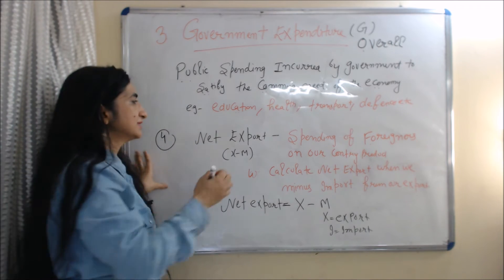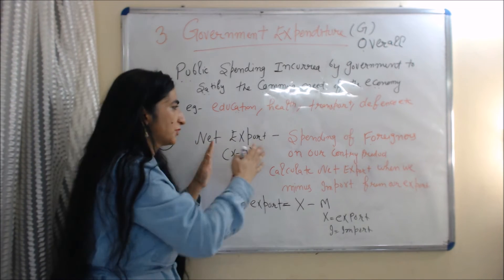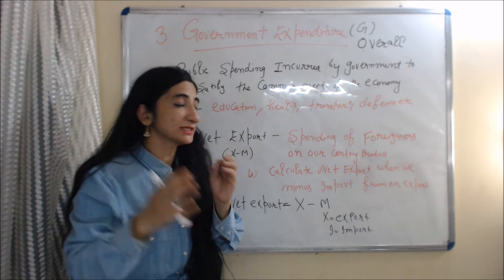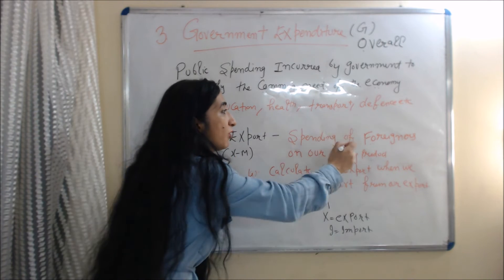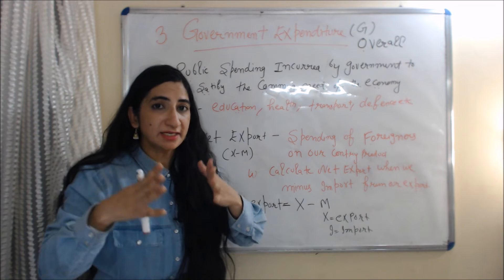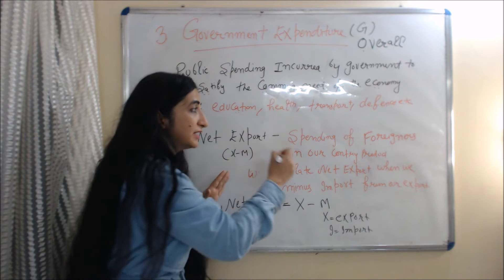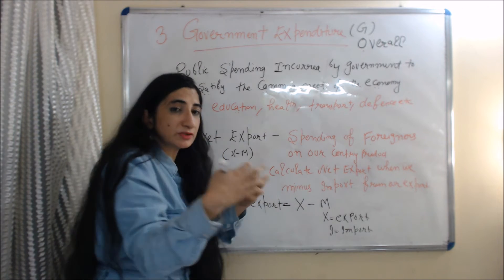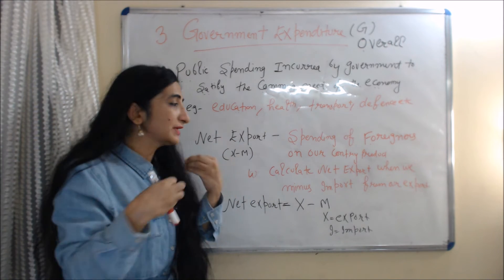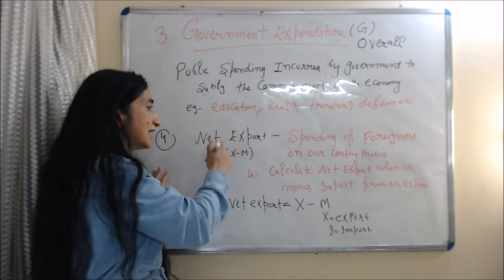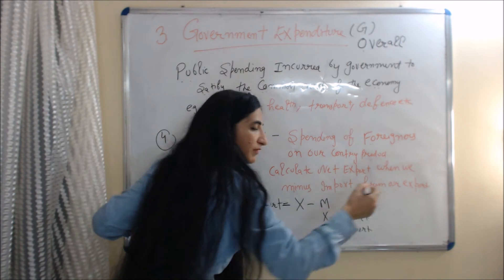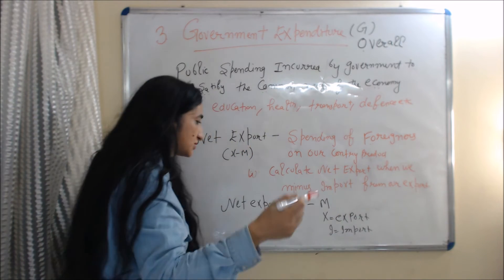The last component of aggregate demand is net export. Net exports are basically the spending of foreigners on our country's products. We can calculate net export by subtracting imports from exports, so net export equals X minus M, where X is export and M is import.